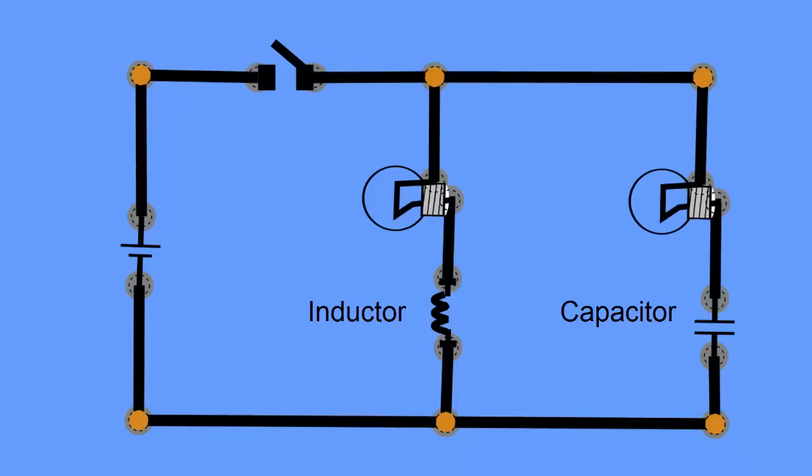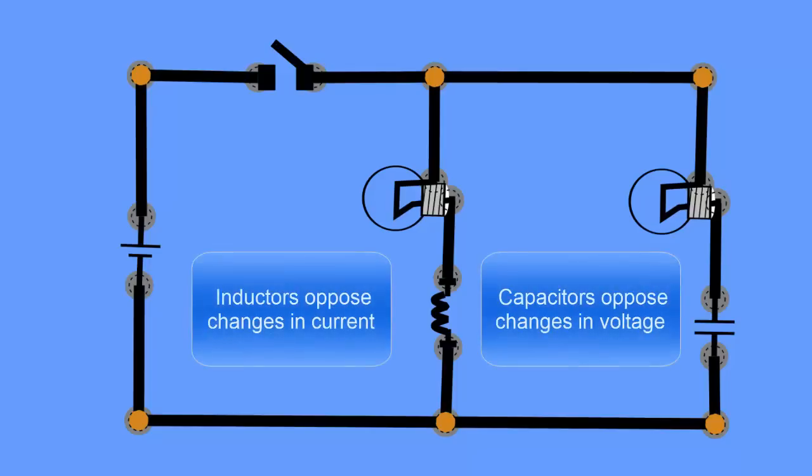We know that inductors oppose instantaneous changes in current, and capacitors oppose instantaneous changes in voltage. So these are the two things that they do—one opposing a change in voltage, one opposing a change in current.